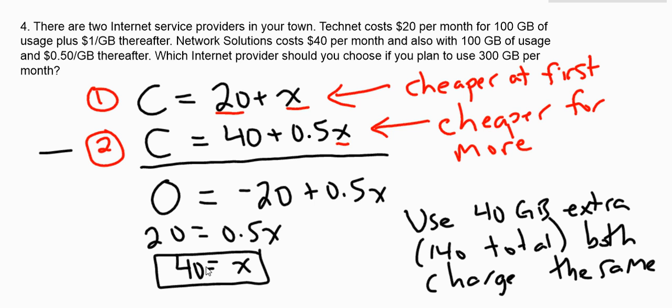If I'm using 300 gigabytes, I definitely want to go with company number two, because before 40 extra gigabytes, the first company is cheaper. After 40 gigabytes, the second company is cheaper. So my answer would be that I want to go with Network Solutions.